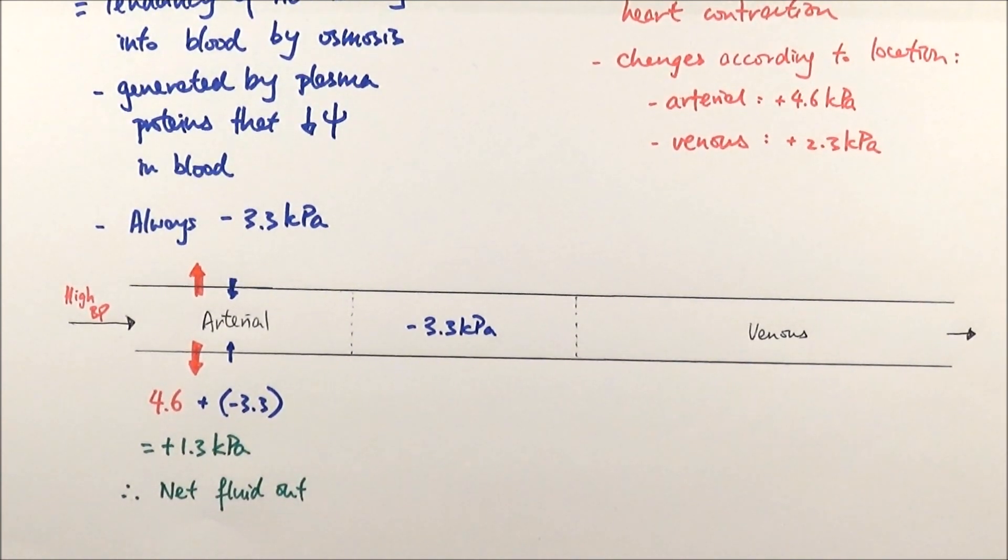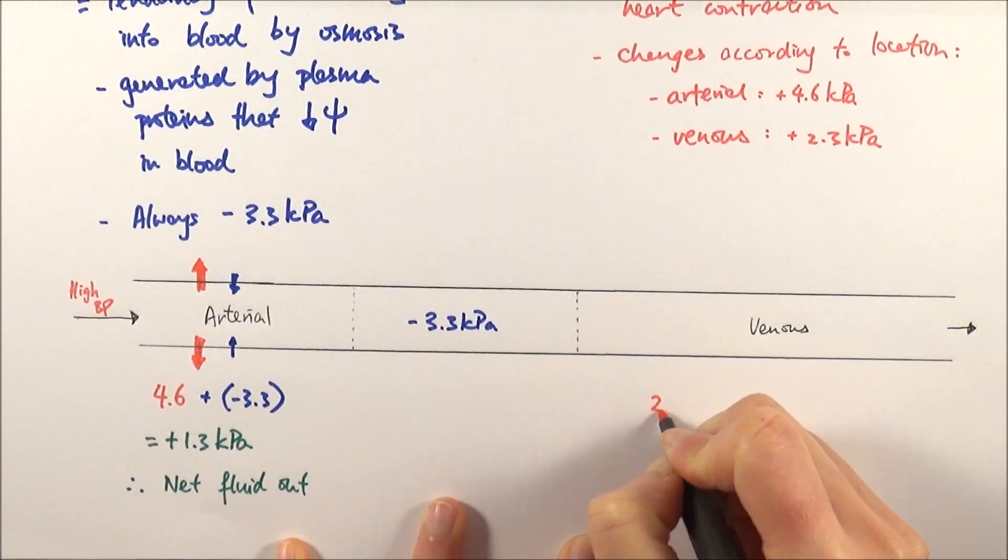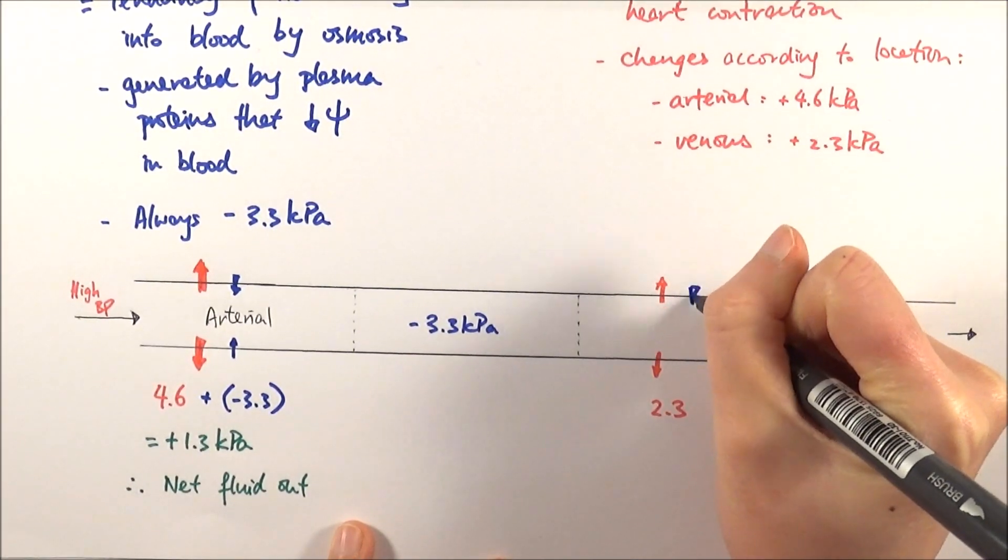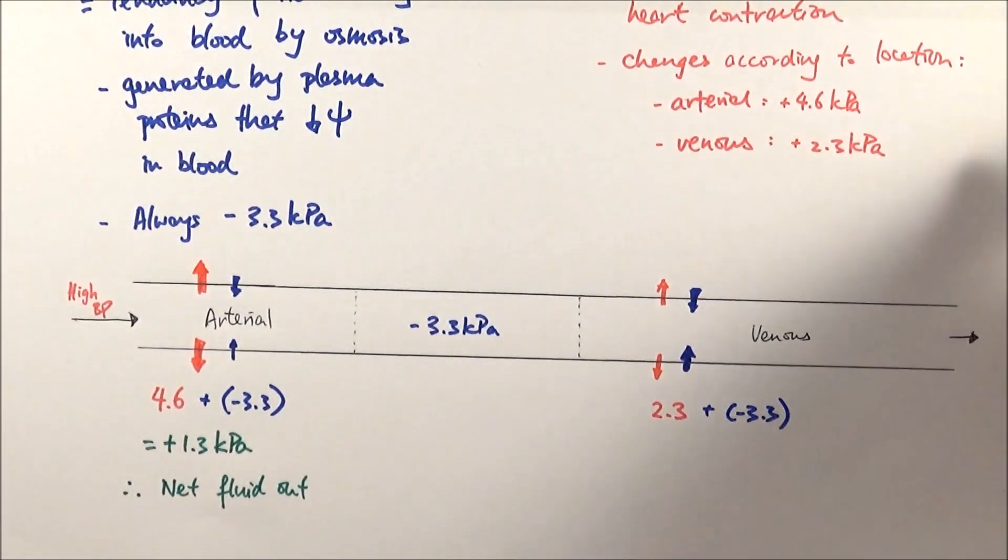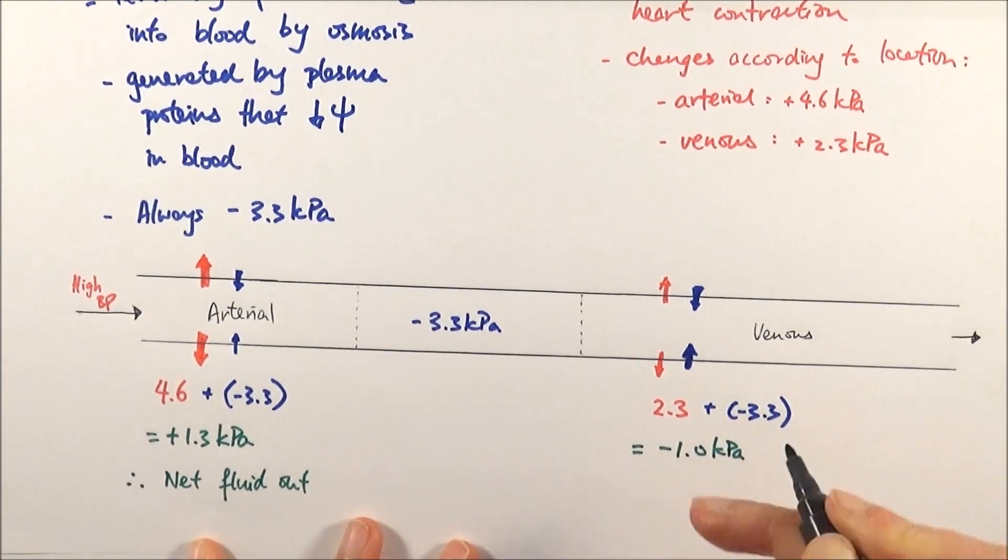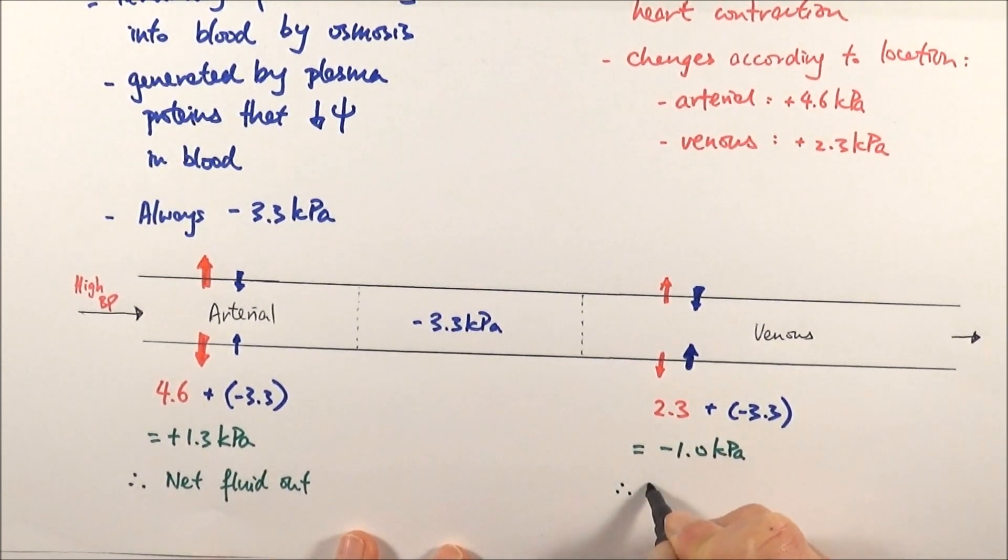Finally, at the venous end, we compare the two again. Hydrostatic pressure is 2.3 kPa, so it's moving out. Oncotic pressure is the same. But if you compare the two and do the calculation to find the overall filtration pressure, this time it is minus 1 kPa. Because it's minus, there is net fluid in.